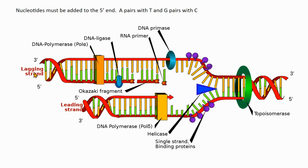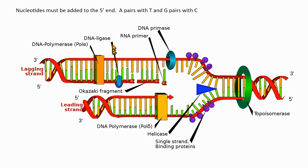The other strand is considered the lagging strand. Since the five prime end is on the opposite side, you can't add nucleotides directly, so you have to backstitch it. A primer starts the process, and then this creates an Okazaki fragment. The strand makes loops and backstitches, and a separate protein — DNA ligase — stitches the backstitched Okazaki fragments together.